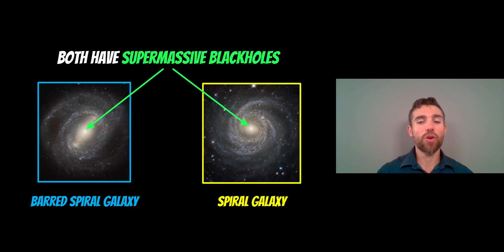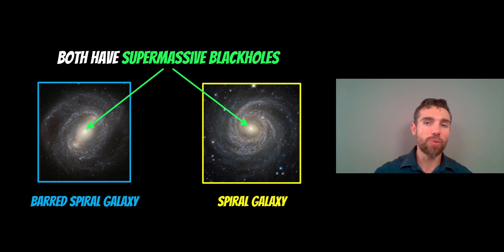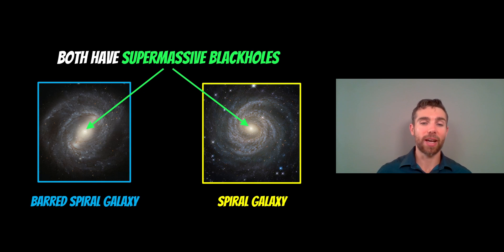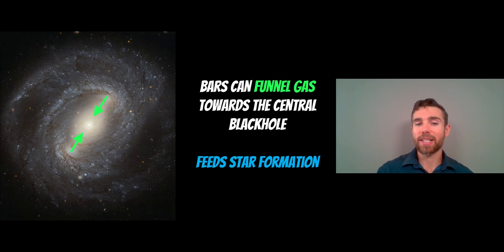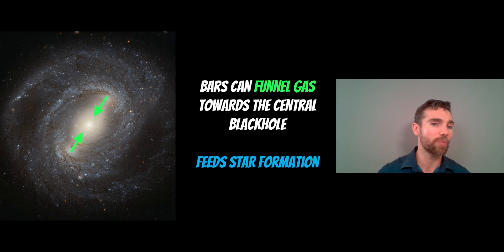In the center of both barred and normal spiral galaxies you have supermassive black holes, and we expect most galaxies to have these — they are hundreds of billions of solar masses, enormous objects. What's particularly important for barred spirals is that the bar can actually funnel gas toward the central black hole, feeding it. Gas from the outer regions of the spiral galaxy gets channeled in toward the black hole through the bar structure.